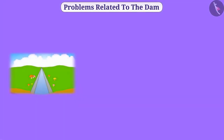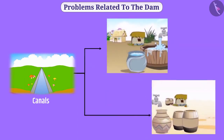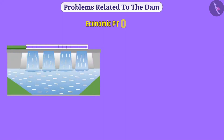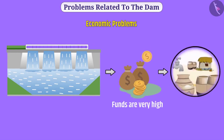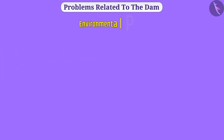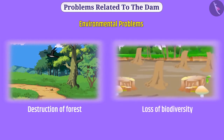With the help of canals, water is transported to far locations, but there is no uniform distribution. Those near the dam use an excessive amount of water while people located far away are deprived of water. Economic problems include very high public funds for large projects with less or no proportional benefit. Environmental problems include large-scale destruction of forest wealth, resulting in loss of biodiversity.